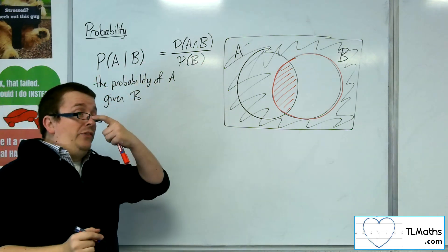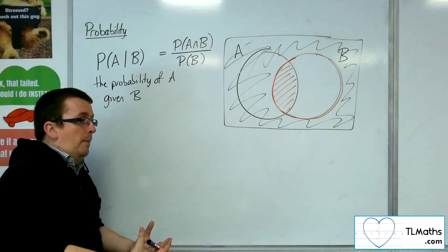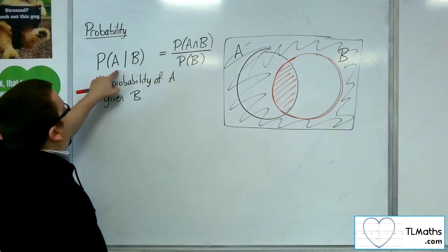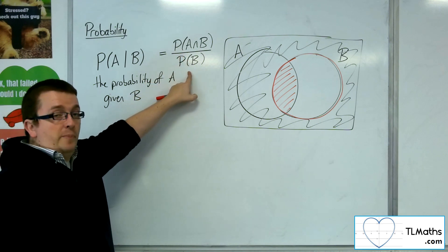And this gives us a neat formula that we can now utilise for conditional probability. So the probability of A given B is the probability of the A intersection B divided by the probability of B.